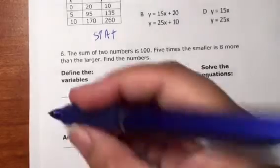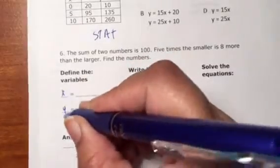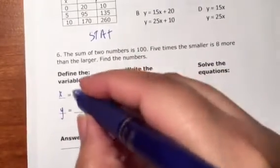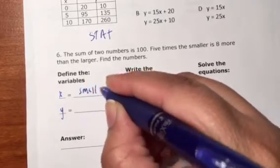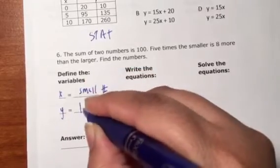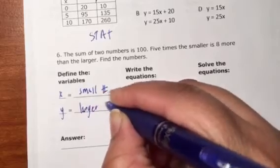But let's try to think about this. We're going to say X and Y, where X is our small number and Y is our larger number.